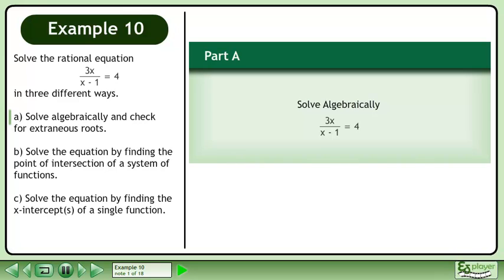Solve the rational equation 3x over x-1 equals 4 in three different ways. In Part A, solve algebraically and check for extraneous roots.